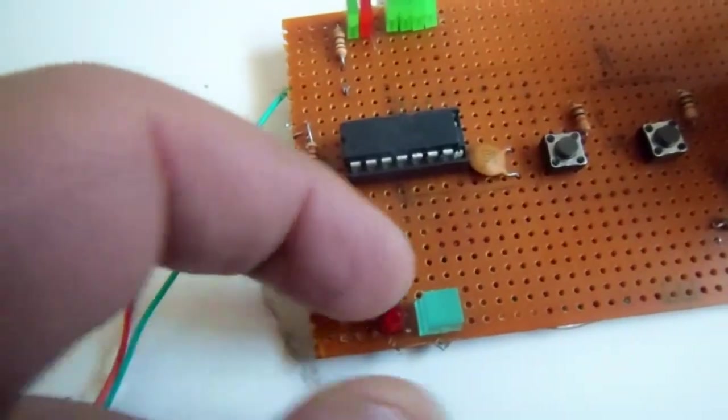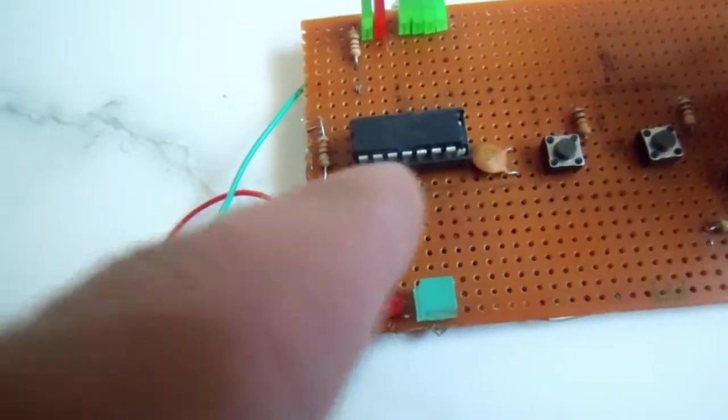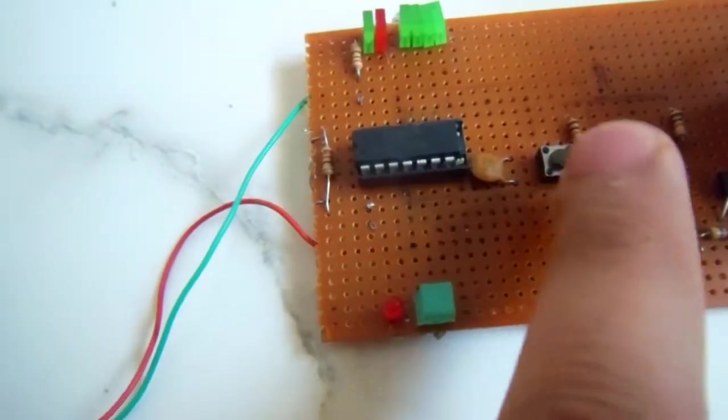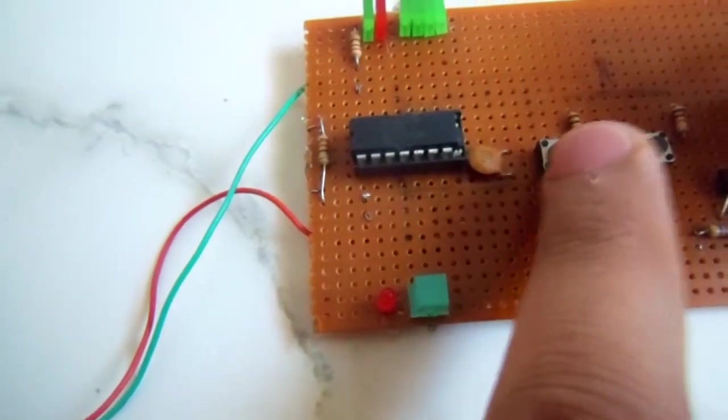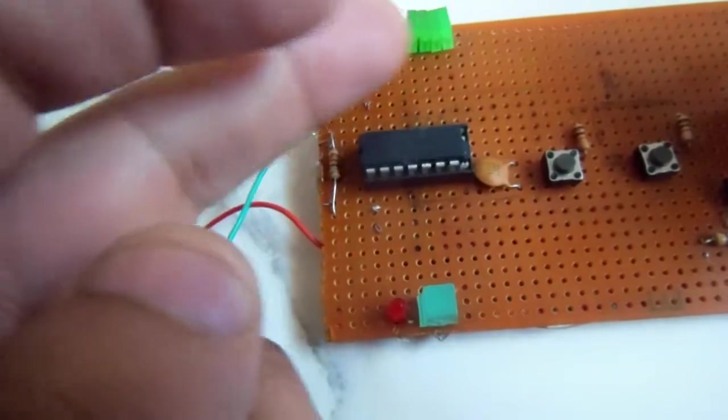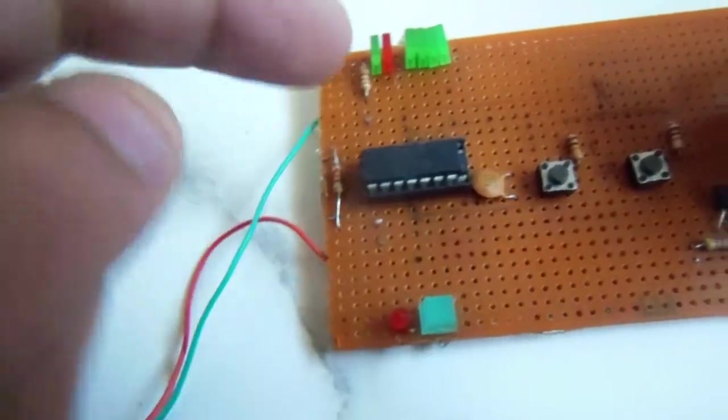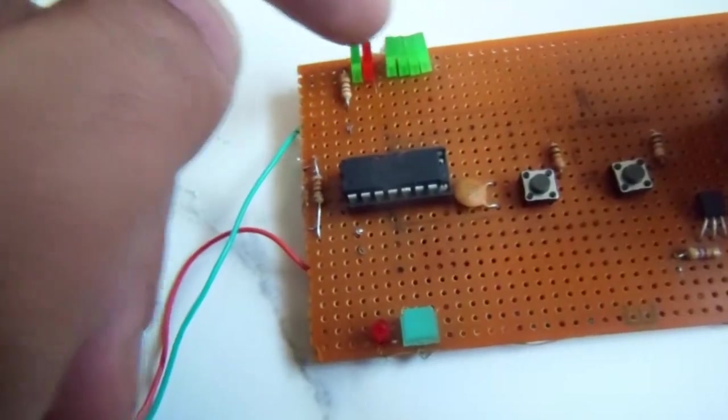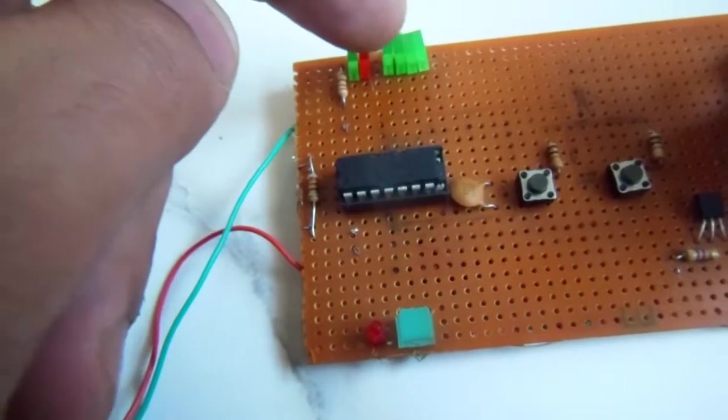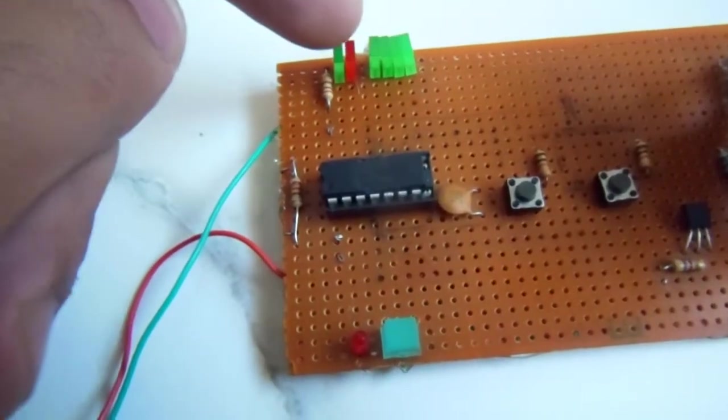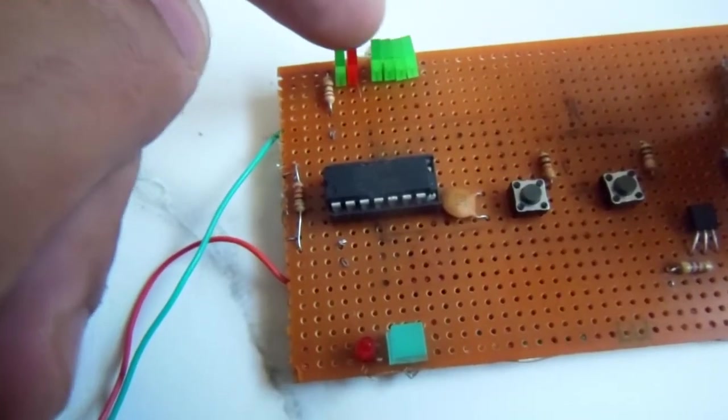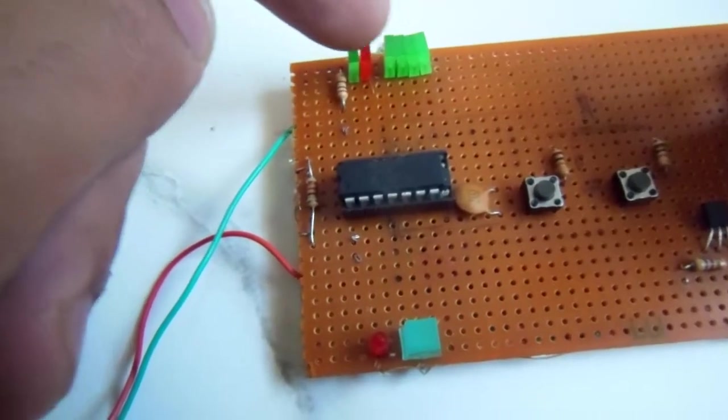the interrupt. This LED has been coded in the ISR, the interrupt service routine. Whenever you press the interrupt button, the microcontroller stops executing the main program, the main function code, and the microcontroller will go to the interrupt service routine.